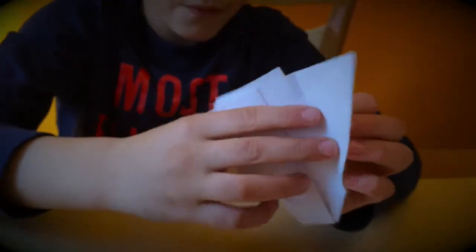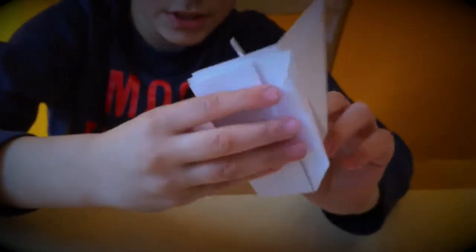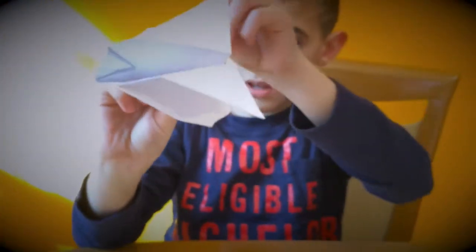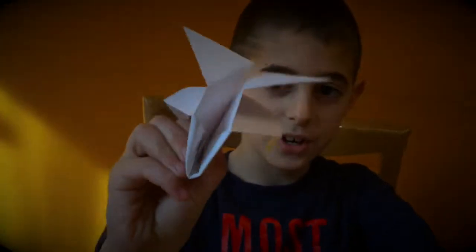Now we have to fold it up like this. Unfold the sides, and then take these two out. And we are done. There you go. The Alien Lander airplane.